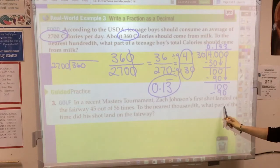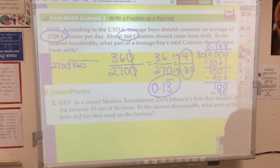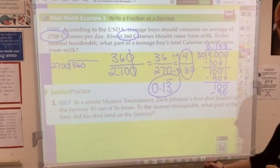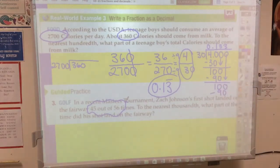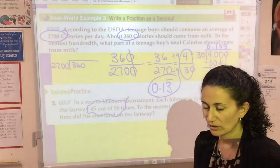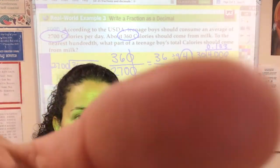I would like you to try this one problem on your own and bring this problem to class tomorrow. We'll go over it then. In a recent Masters Tournament, Zach Johnson's first shot landed on the fairway 45 out of 56 times. To the nearest thousandth, what part of the time did his shot land on the fairway? Go ahead and use whatever strategies you can to come up with that fraction as a decimal. Great listening. Bring all those notes and this example to class tomorrow. I'll see you then.